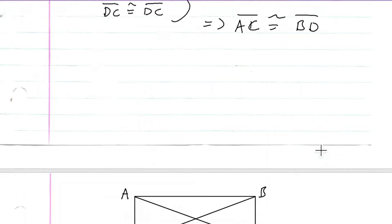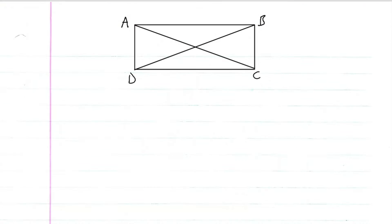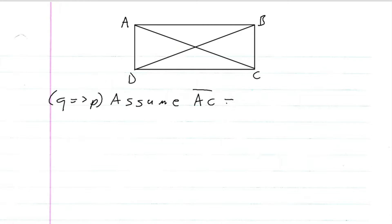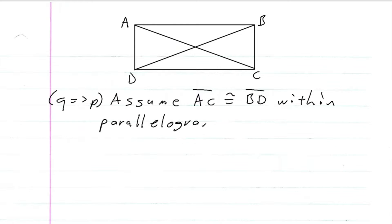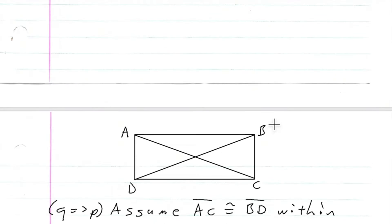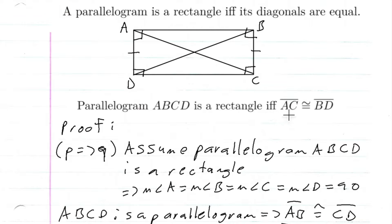All right, so now we're going to go the other way. We're going to do Q implies P. So we're going to assume AC is congruent to BD within parallelogram ABCD. We know that AC congruent to BD in parallelogram ABCD, and we want to show that it is a rectangle.